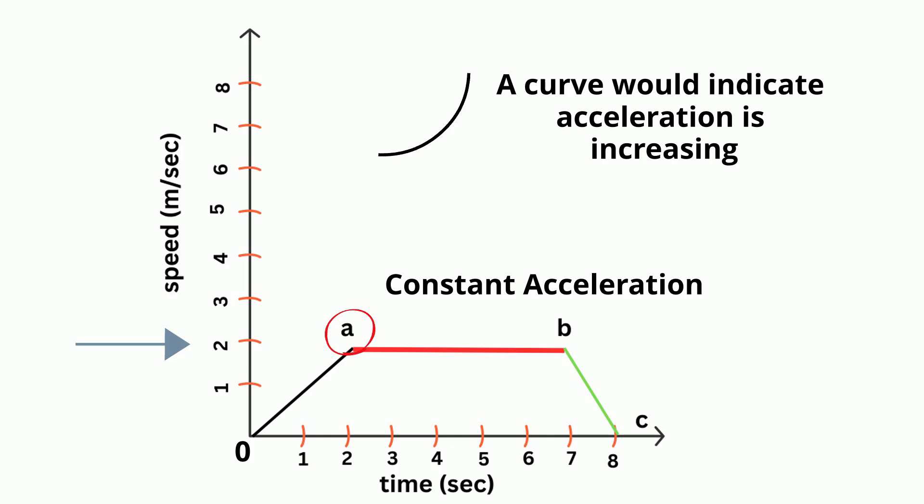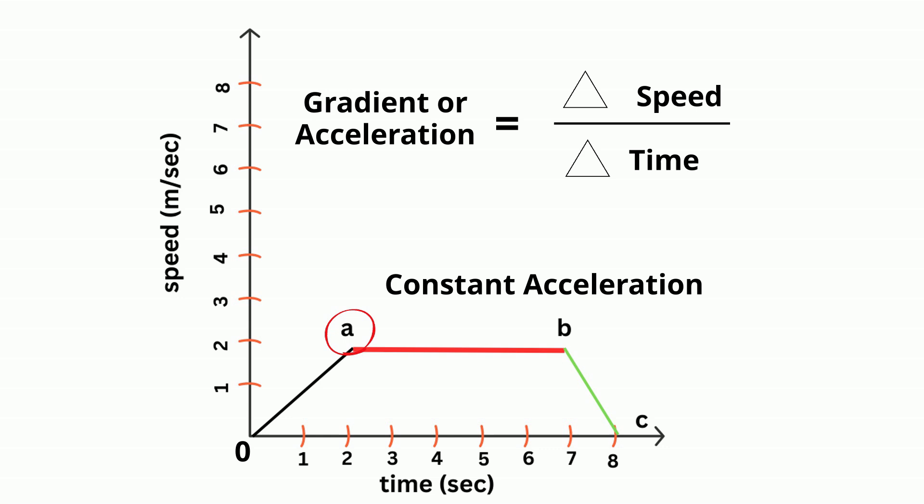In order to calculate the rate, you would find the gradient or the acceleration and you would use change in speed over change in time. So it went from zero to two, so that would be two meters per second, and then it traveled two seconds. When you divide those you have one meter per second squared. Acceleration is in meters per second squared.